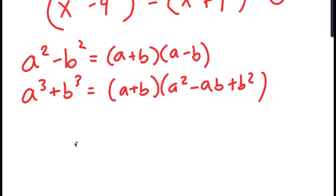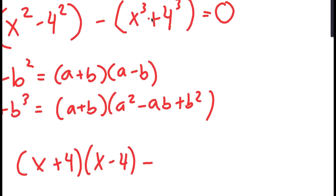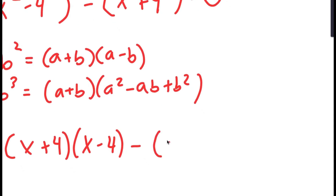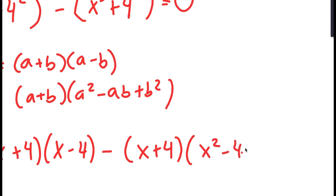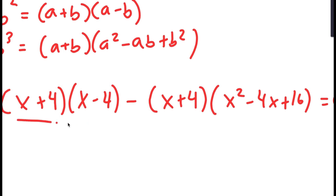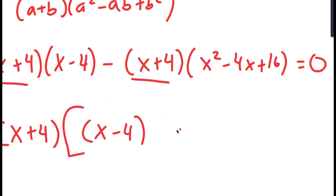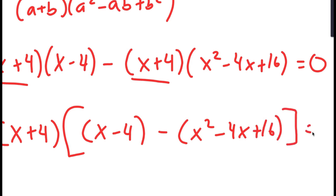So for x squared minus 4 squared, it turns into x plus 4 times x minus 4. And x cubed plus 4 cubed turns into x plus 4 times x squared minus 4x plus 16. Since both terms contain x plus 4, I can factor it out, giving x plus 4 times the quantity x minus 4 minus the quantity x squared minus 4x plus 16, equal to 0.